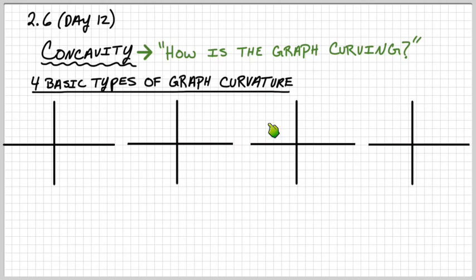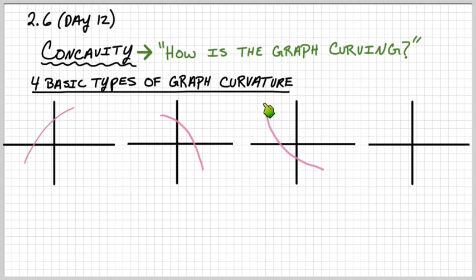So I'll draw a rough sketch of all four. There's my first one — increasing, that kind of curve. Next one, similar, just decreasing, curving. Notice these aren't linear, these aren't lines, they're actually curving. Third one — decreasing with a curve. Fourth one — curved up. So those are four basic types of curvature for our graphs.